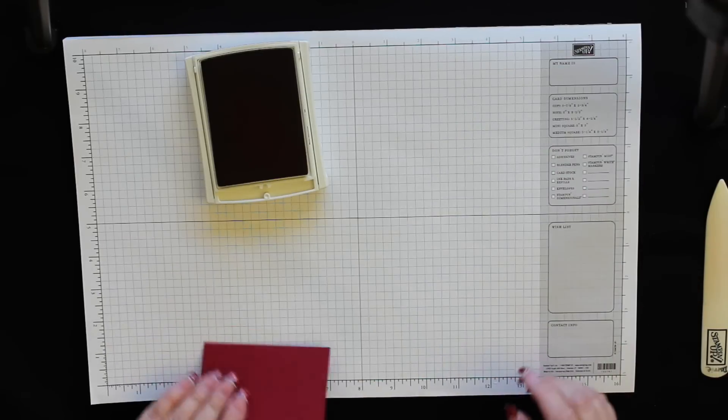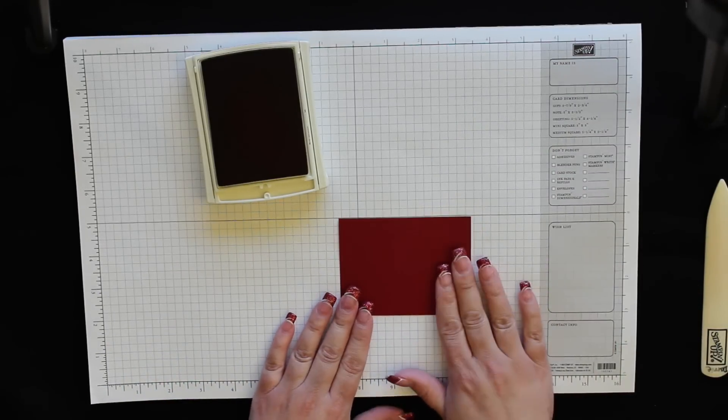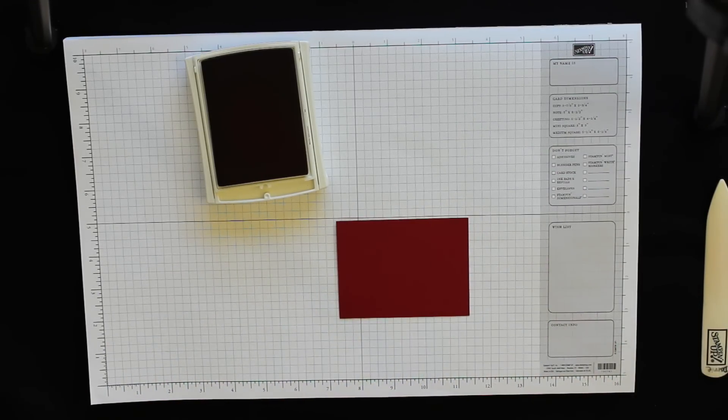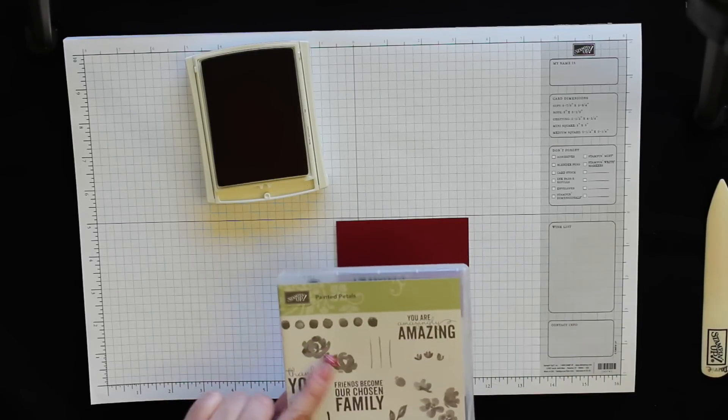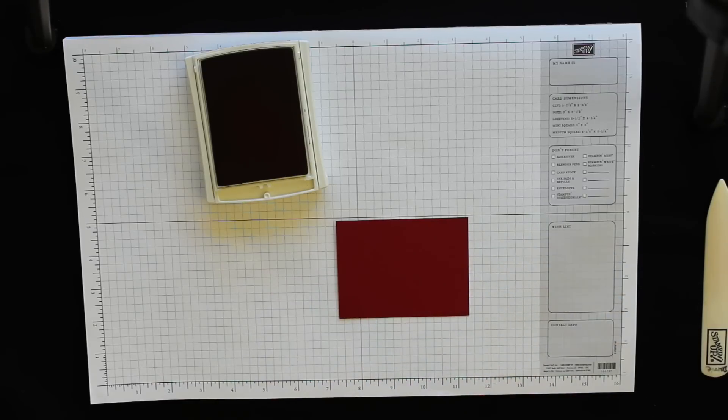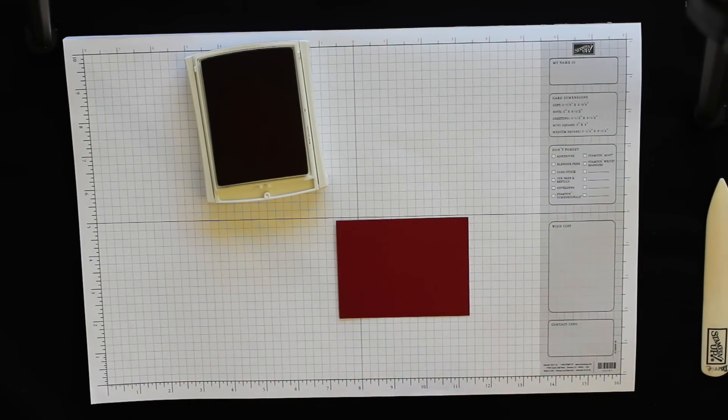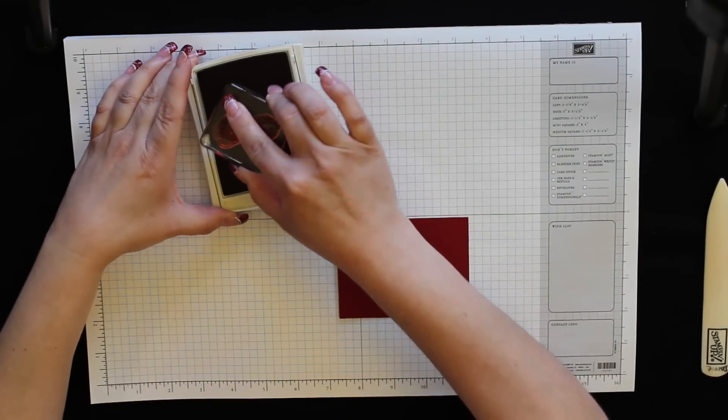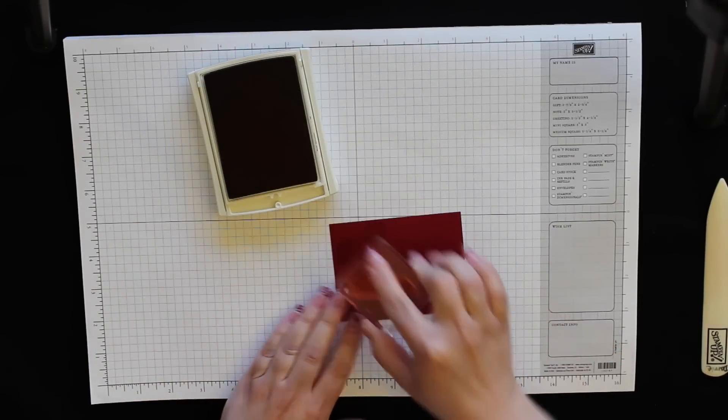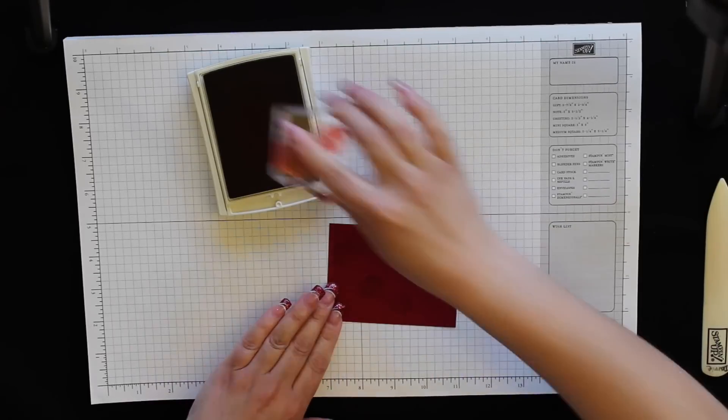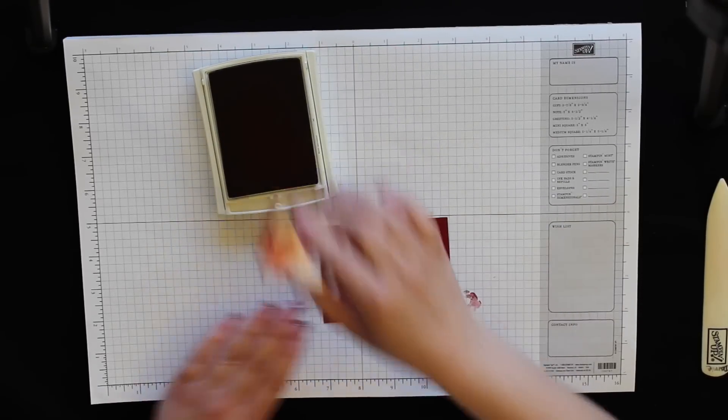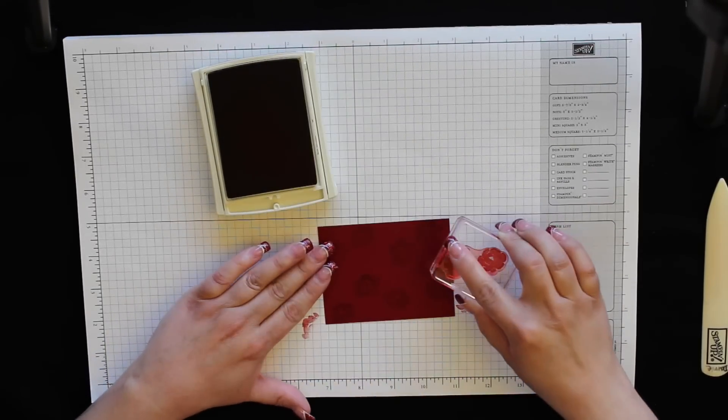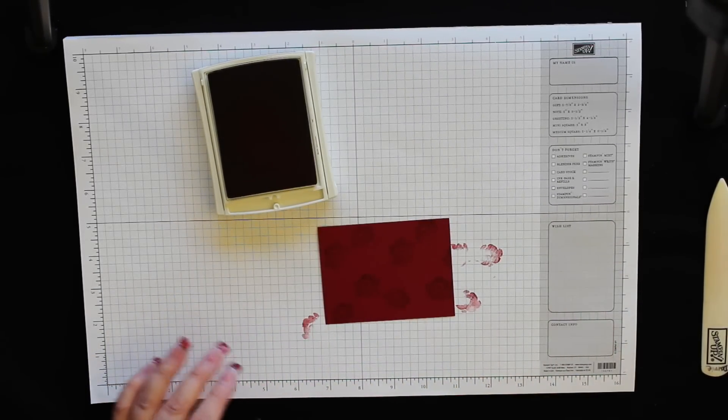Now for this piece of the Cherry Cobbler, this is the one that measures 3 inches by 4 inches. I'm going to be stamping the small flower image, this one right here, all over in Cherry Cobbler ink. I'm just going to be stamping it randomly all over. And that's done.